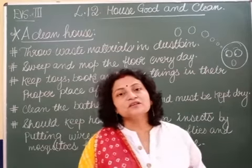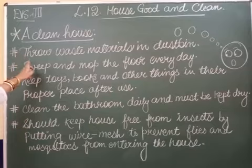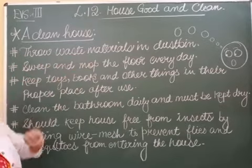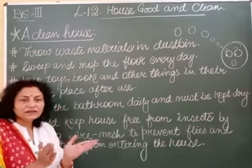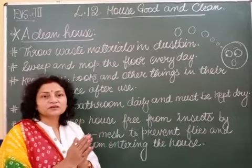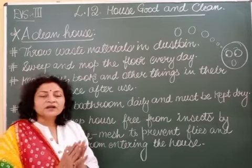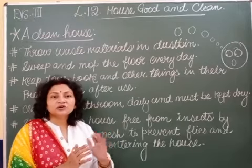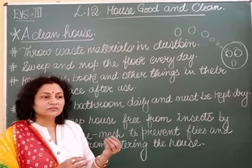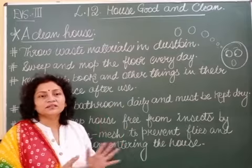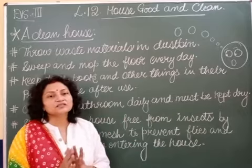Now let us talk about what we should follow and what we should do to keep our house clean. First of all, we need to talk about throwing waste materials in the dustbin. If I divide by the color of dustbin, there are generally two types known — the blue dustbin and the green dustbin. In the blue dustbin, we put all dry things like bottles, glasses, or tea cups. In the green dustbin, we put peel and corn waste, plant waste, or animal waste.